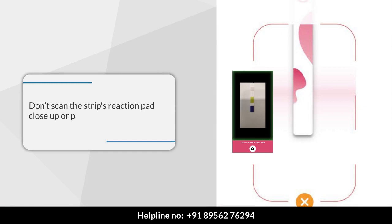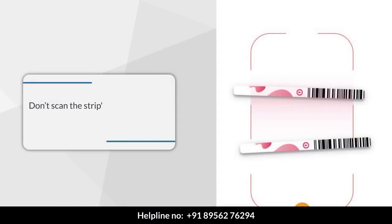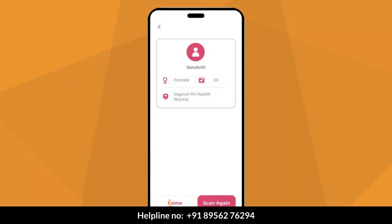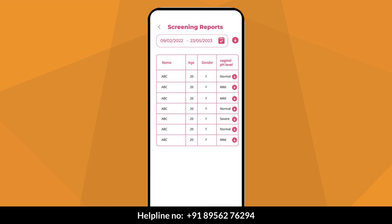Do not scan the strip's reaction pad close up or just part of the strip — the complete strip should be scanned. Multiple images should not be captured. Do not submit a scan if the image is blurred. You will then see the vaginal PH result. Click on the screening report to see all past screening results. You can select a date filter for a specific date range and download the reports.